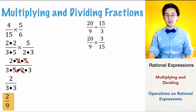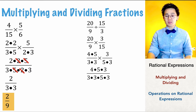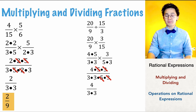We factor out 20, 9, and 15: 20 becomes 4 times 5, 9 is 3 times 3, and 15 becomes 5 times 3. Combining numerator and denominator gives us 4 times 5 times 3 over 3 times 3 times 5 times 3. By cancellation, we get rid of 5 and 3, leaving us with 4 over 3 times 3. So the quotient is 4 over 9, using prime factorization.